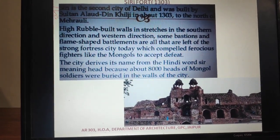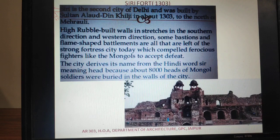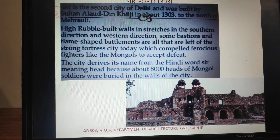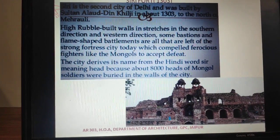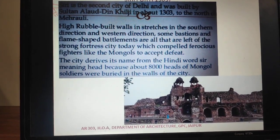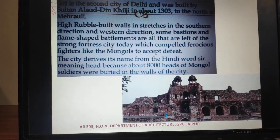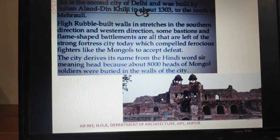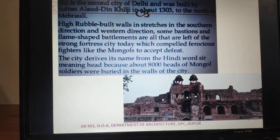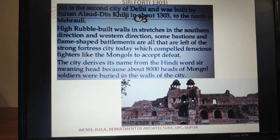Siri Fort was built with the heads of Mongol soldiers buried here, which is how it got its name. It was built in random rubble masonry with bastions at the corners and flame-shaped battlements. This is called Siri Fort — the name comes from the Mongolian soldiers buried there.